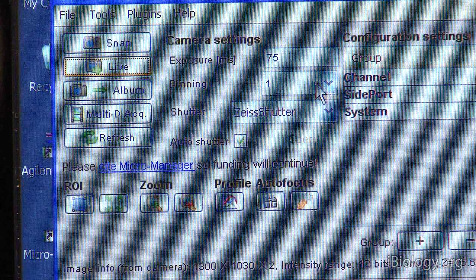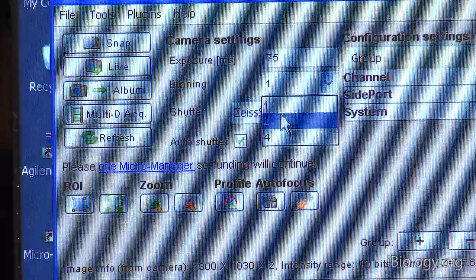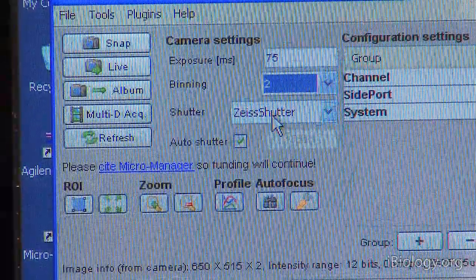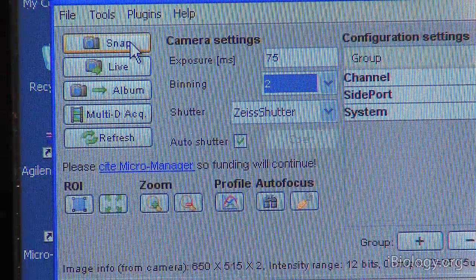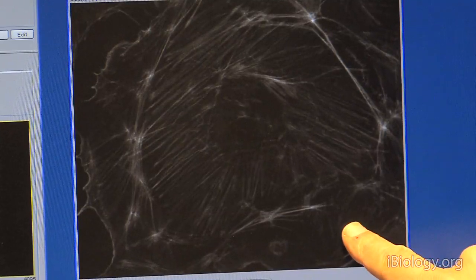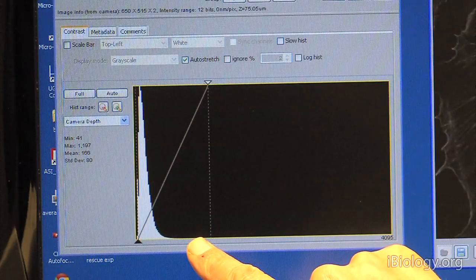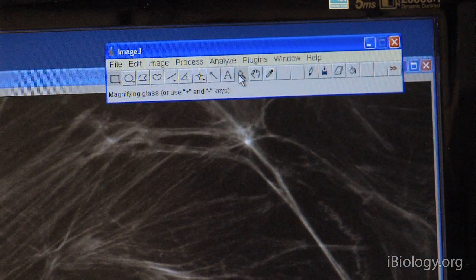Binning. We talked in the camera lecture about the ability to group groups of four pixels and read those out in one go. I can control that here. I can say, okay, give me two by two binning. So, four pixels in one. And when I now snap an image, it is significantly smaller. But you also see in the histogram that it got significantly brighter.